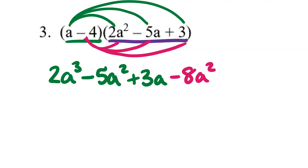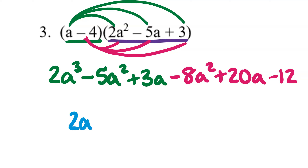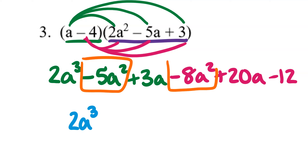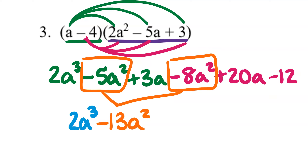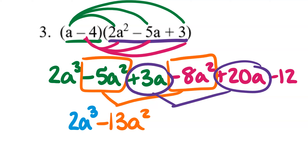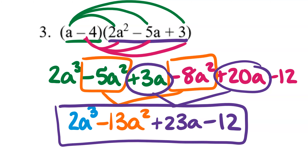-4 × (-5a) = +20a, and -4 × 3 = -12. Now combine like terms: 2a³ has no like terms, so leave it. -5a² + (-8a²) = -13a². Then 3a + 20a = 23a, and -12 has no like term. So the final answer for number three is 2a³ - 13a² + 23a - 12.